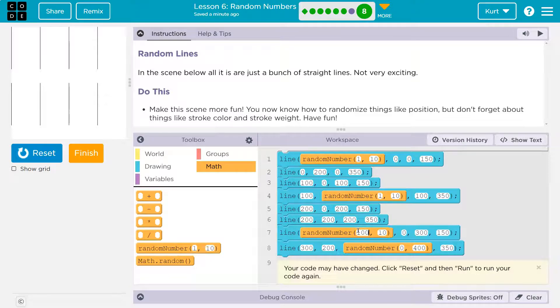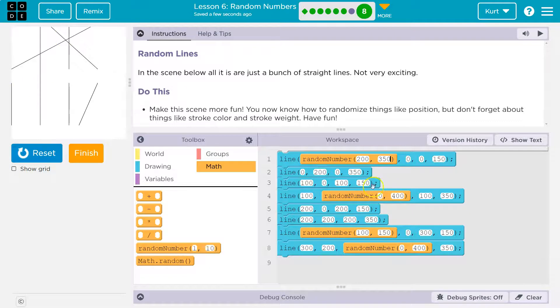400 is anywhere on the screen, but maybe I want this one 100 to 150 and 0, 400 and, I don't know, 200 to 350. That's already going to change stuff up some. Cool.